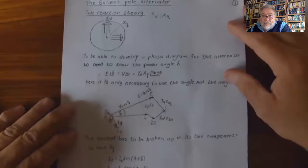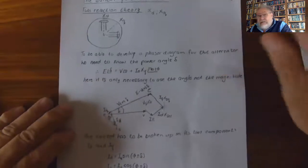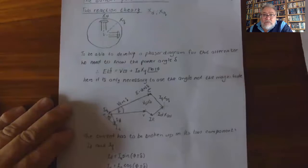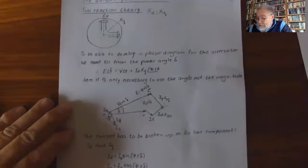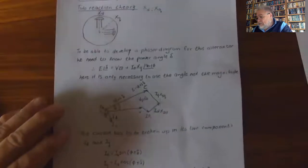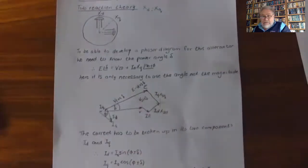To develop a phasor diagram for this alternator, we need to know the power angle delta. That can be determined by: E∠δ = V∠0 + Ia·Xq∠(90 ± φ). It is only necessary to use the angle and not the magnitude.